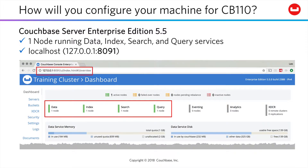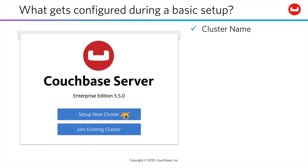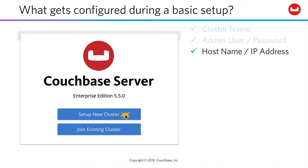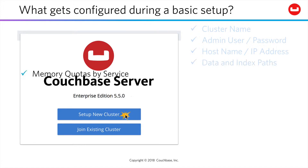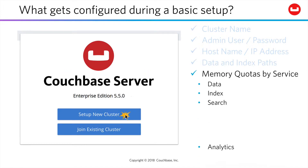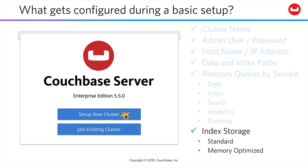You'll access the admin UI at localhost 8091. You'll set up a new cluster and assign it a name, provide administrator credentials, a hostname and IP address, the location for data and index storage, memory quotas for each of the five independently scalable services, and configure your cluster to perform in-memory indexing.